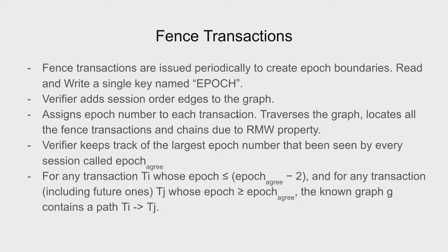It gives us the guarantee that whatever for a transaction I, whose epoch number may be less than equal to whatever the agreed upon epoch is subtracted by two right now. And for any future transactions whose epoch may be greater than the agreed upon epoch right now, whatever graph we have will contain a path between those two transactions.